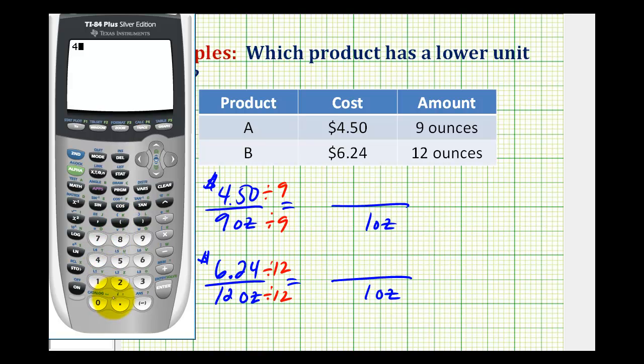So for brand A, we'll have 4.5 divided by 9. So brand A costs $0.50 per ounce. And then for brand B, we'll have 6.24 divided by 12.